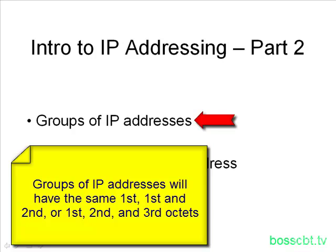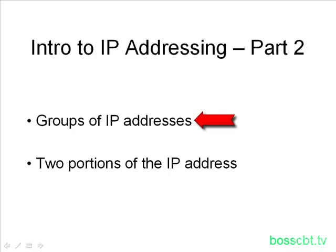The thing in common that an IP address can have is almost always the first octet. Sometimes it's the first octet and the second octet. So each member of the group, even though the IP address has four octets, they will all have the same first octet, or sometimes the same first and second octet, and other times the same first, second, and third octet. Let's go ahead and take a look at this in a diagram.